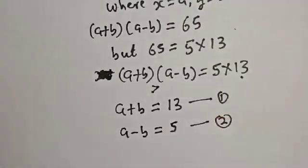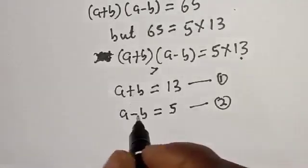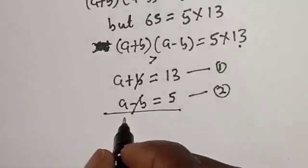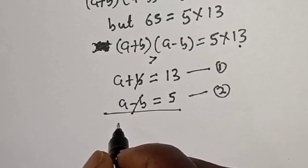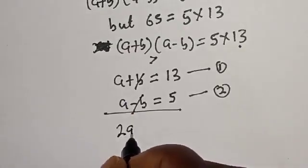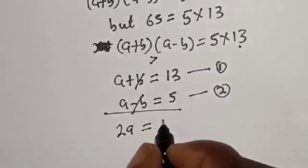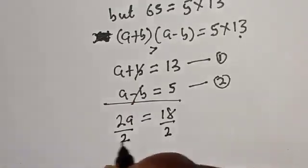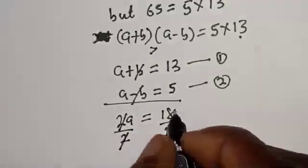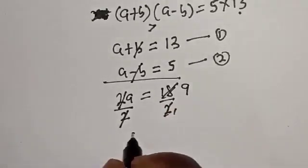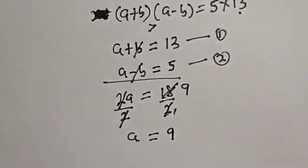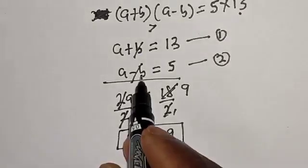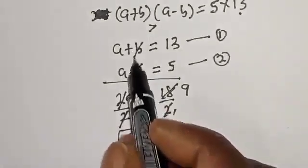Also, a minus b is equal to 5 — let's call this equation 2 — where a and b are positive integers. Adding equation 1 and equation 2 together, the b terms cancel, giving 2a equal to 13 plus 5, which is 18. Dividing both sides by 2, a is equal to 9.